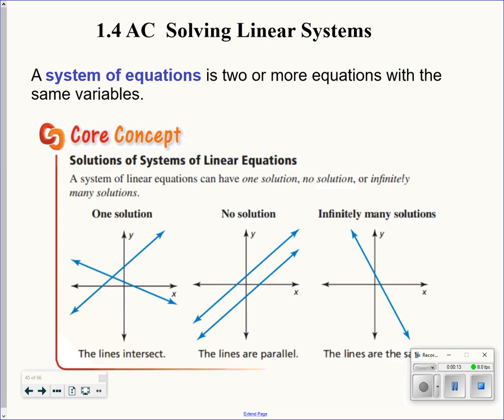So a system of equations, this is going back to your Algebra 1 days. A system of equations is two or more equations with the same variables. You can have three equations with three unknowns. We're going to today deal with just two equations with two unknowns, so we're talking about linear right now.